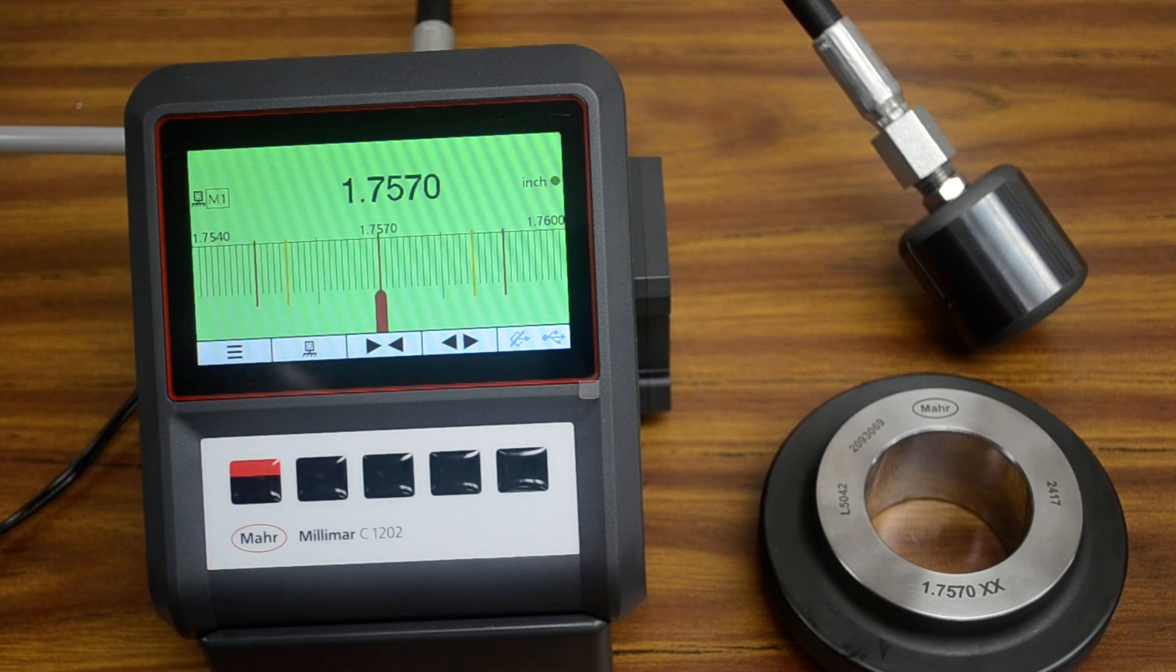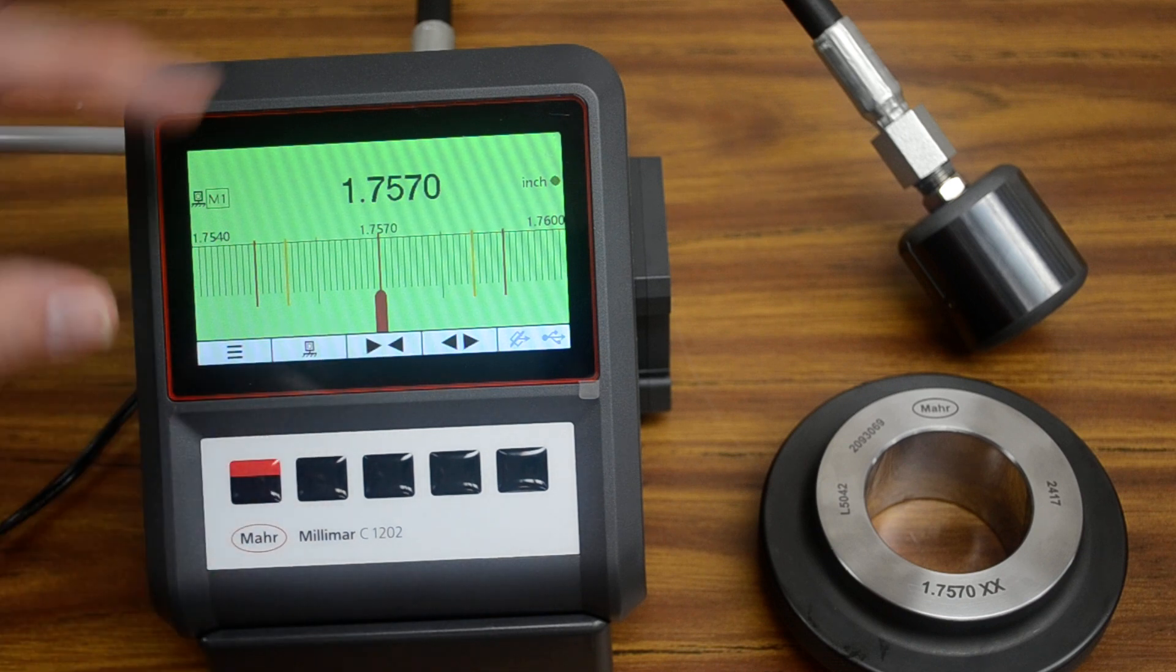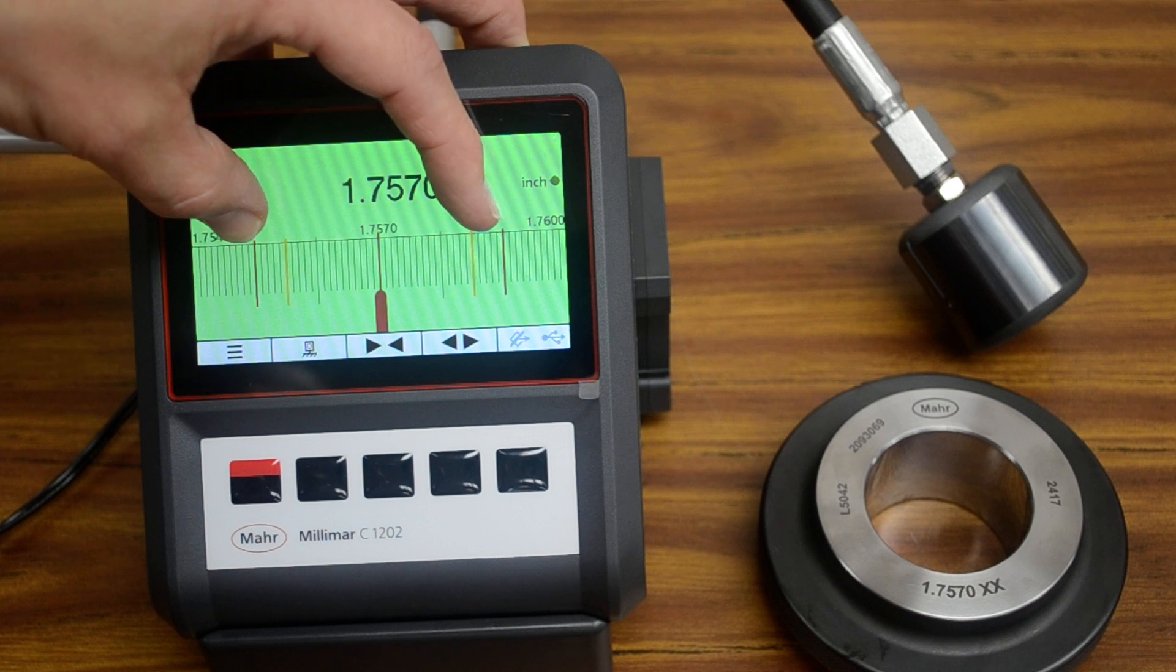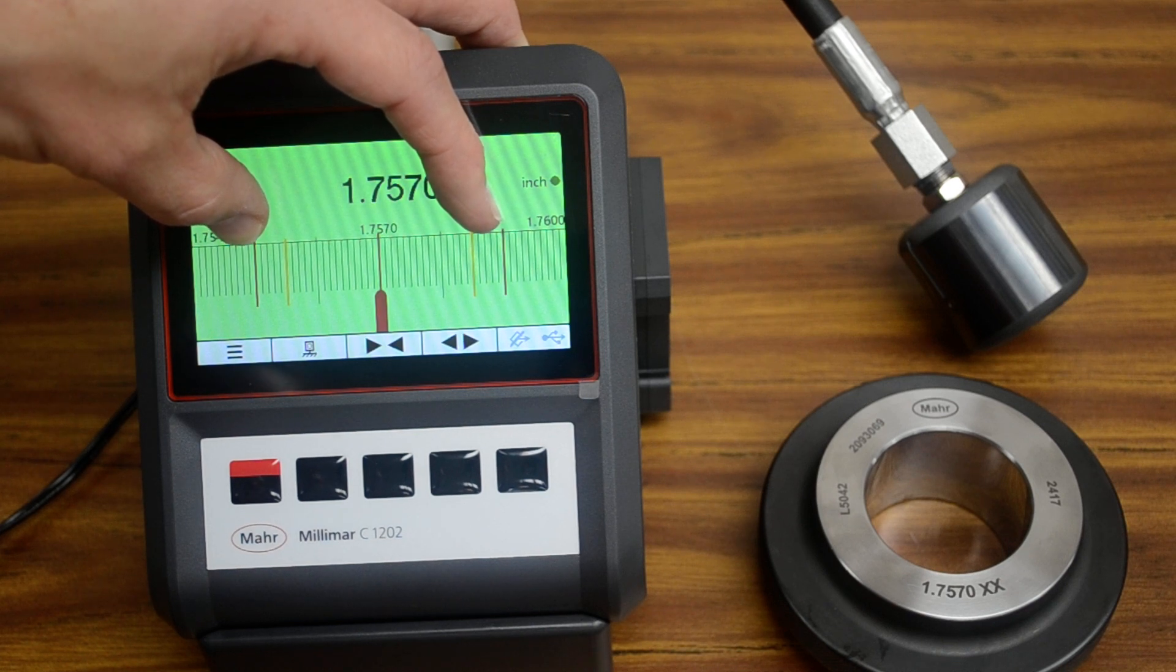The large bar in the middle is your actual reading value. Now, at the moment, the air is off, so it's not actually doing any reading. But then we have outer red bars, and those are the tolerance limits we set up. In this case, we set for plus or minus two thousandths of an inch.